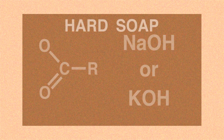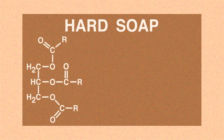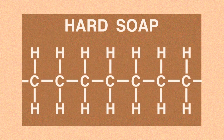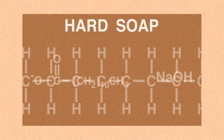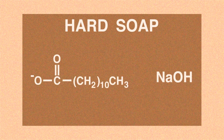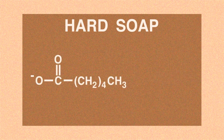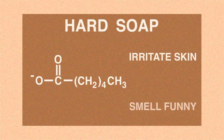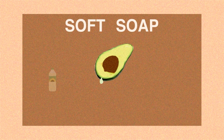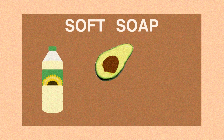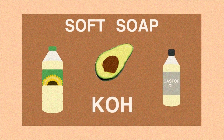Typically, hard soaps are made when fatty acid esters with R groups containing 12 carbons or more use sodium hydroxide in the saponification process. Fatty acid esters with 6 carbons or less are not used as they irritate the skin and smell unpleasant. Soft soaps use fatty acid esters like avocado oil, sunflower oil and castor oil and are reacted with potassium hydroxide when saponified.